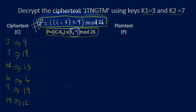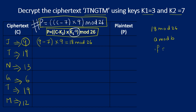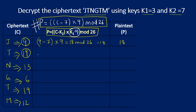For the first number, C = 9: (9 − 7) × 9 mod 26 = 2 × 9 mod 26 = 18 mod 26 = 18. Since 18 is positive and less than 26, 18 mod 26 = 18 directly. The recovered plaintext number is 18.